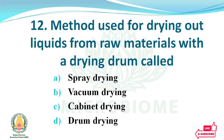The method used for drying out liquids from raw materials with a drying drum is called — options: spray drying, vacuum drying, cabinet drying, drum drying. The right answer: option D, drum drying.